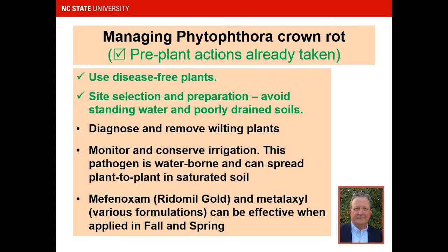Managing Phytophthora: pre-plant actions already taken include using disease-free plants and selecting a good site without standing water or poorly drained soils. Going forward, diagnose and remove wilting plants, monitor and conserve irrigation — remember this is a waterborne pathogen that can spread plant to plant in saturated soil. The products you would use are very different from anthracnose crown rot: Mefenoxam or Metalaxyl, the water mold products, should be applied through a drip system in fall and spring to manage Phytophthora crown rot.